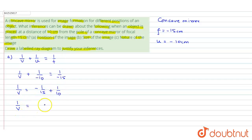On solving it by cross multiplication method, it becomes minus 10 plus 15 upon 150.